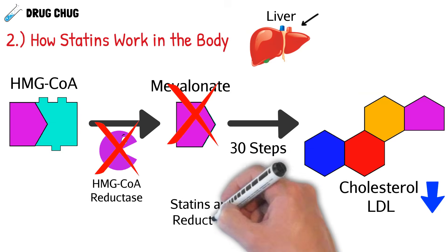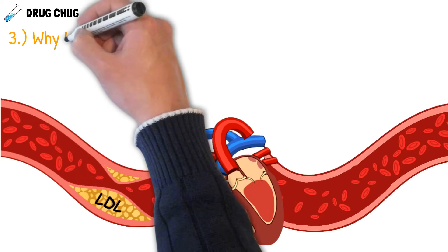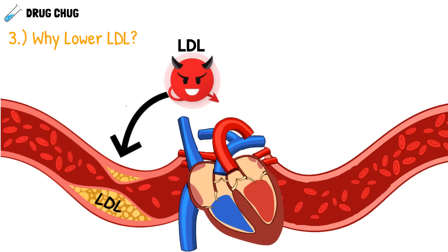All statins are HMG-CoA reductase inhibitors because they block the conversion of HMG-CoA into cholesterol in the liver. Now let's see why LDL is bad for us. All our blood vessels lead to our heart and brain, and LDL becomes very sticky in our blood vessels, sticking onto the vessel walls and building up over time, narrowing blood flow to the heart and brain.